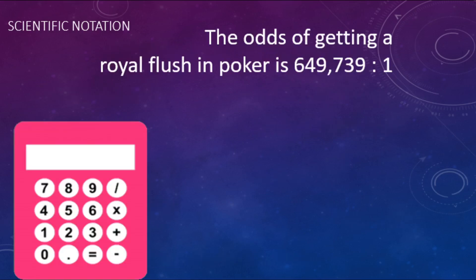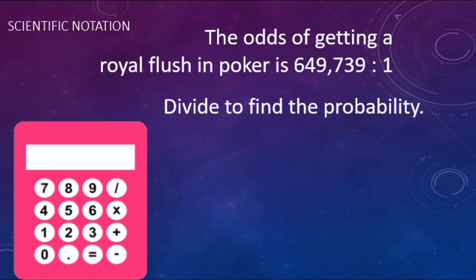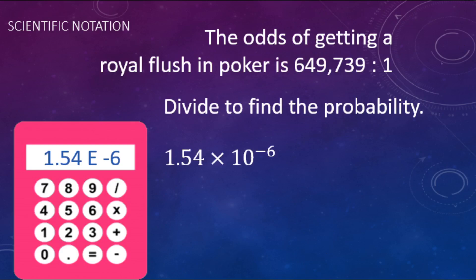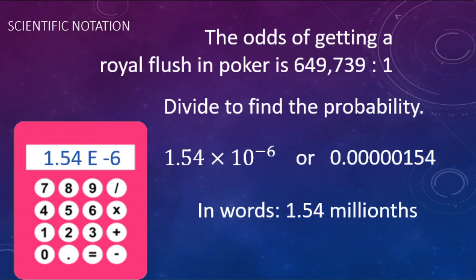Here's a really small number: the odds of getting a royal flush in poker, about 649,000 to one. To find the probability you divide, and the calculator might show it as 1.54E negative six. Newer calculators will show it in scientific notation as 1.54 times 10 to the negative six. The decimal place was right behind the one and moved over six spots — and millionths is six zeros in front of the one. So in words, 1.54 millionths.